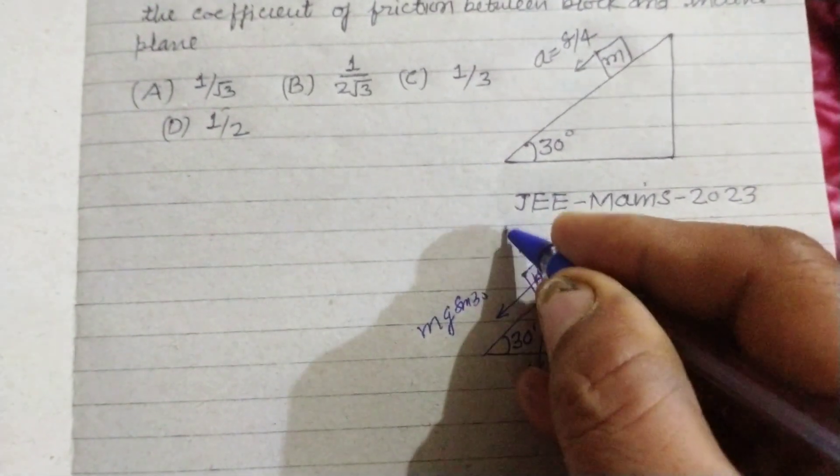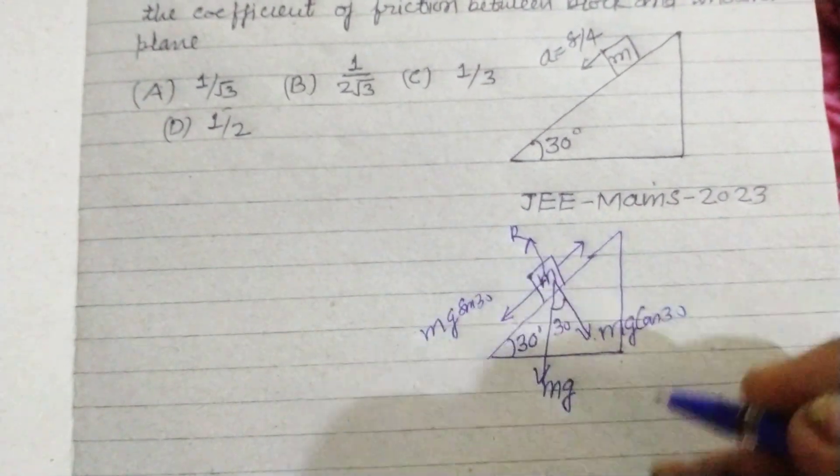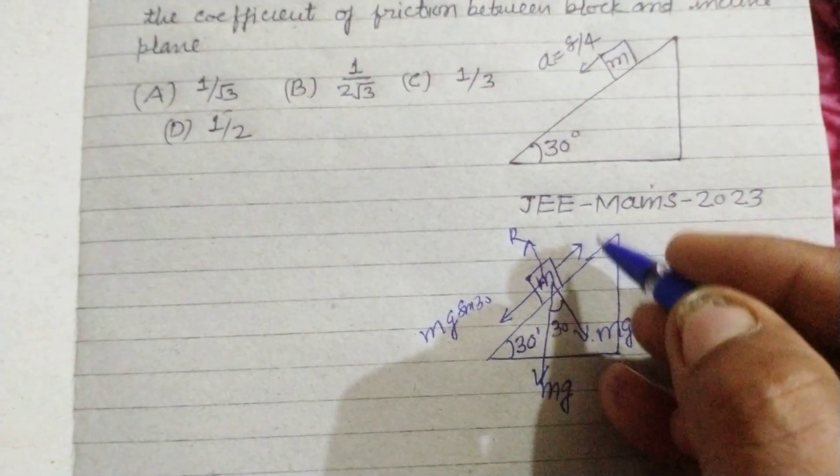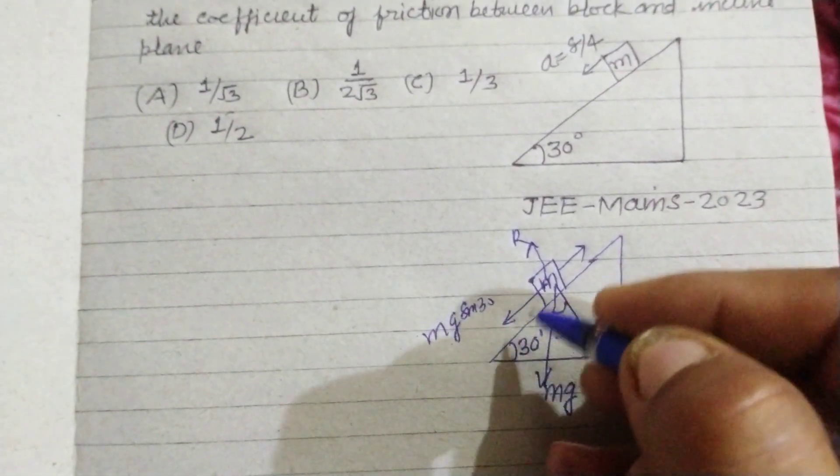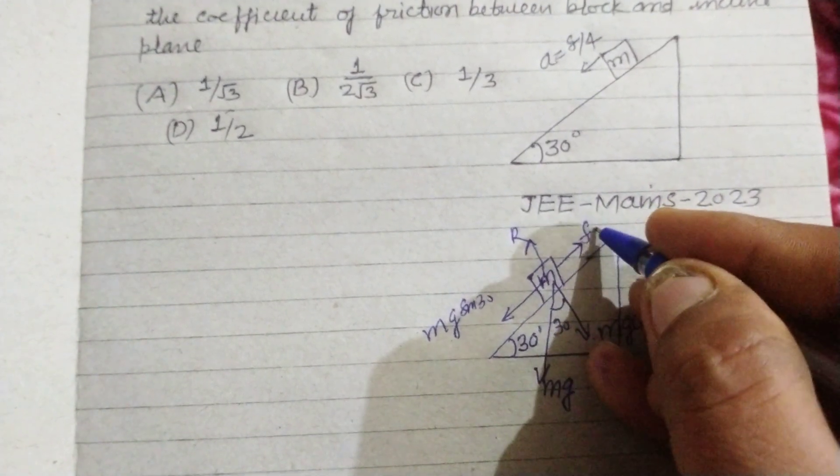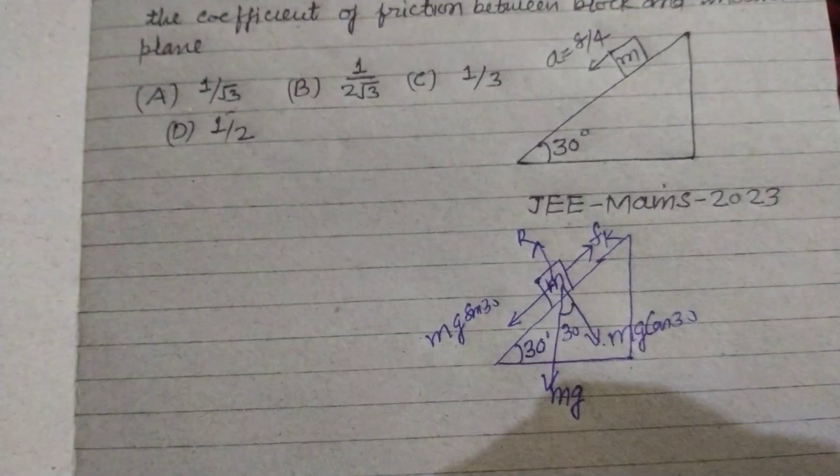The normal reaction of the plane is R and the friction force acts in upward direction because the block is coming in downward direction to the plane. So this is Fk, kinetic friction.